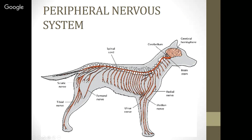That was the central nervous system and diseases of the central nervous system. We're going to take a break and come back with part two on the peripheral nervous system in just a minute.